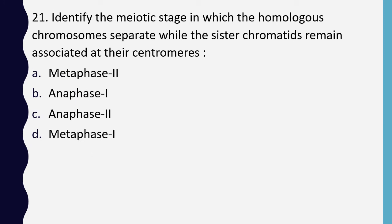Question 21. Identify the meiotic stage in which homologous chromosomes separate while the sister chromatids remain associated at their centromeres: metaphase 2, anaphase 1, anaphase 2, or metaphase 1.